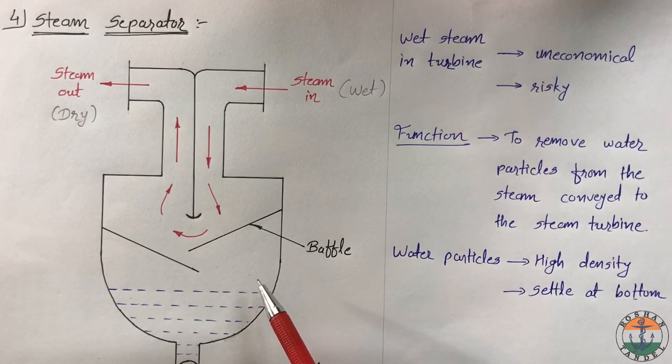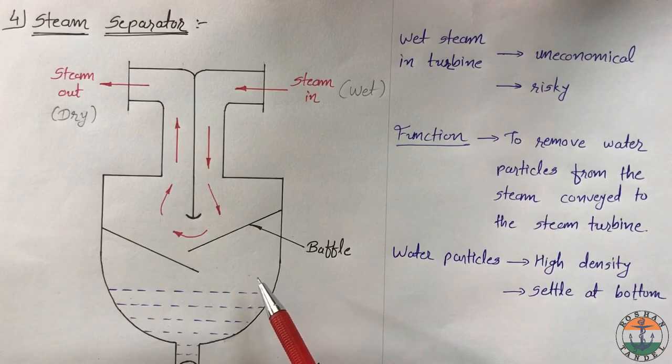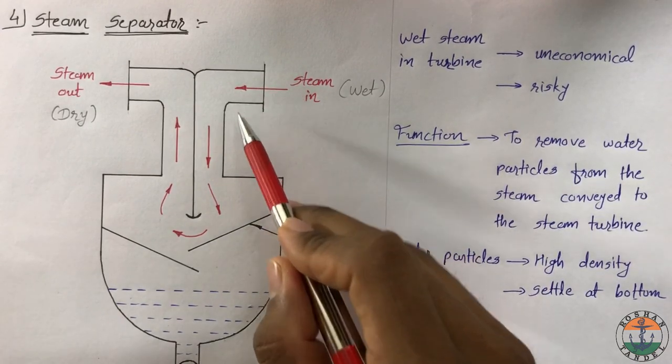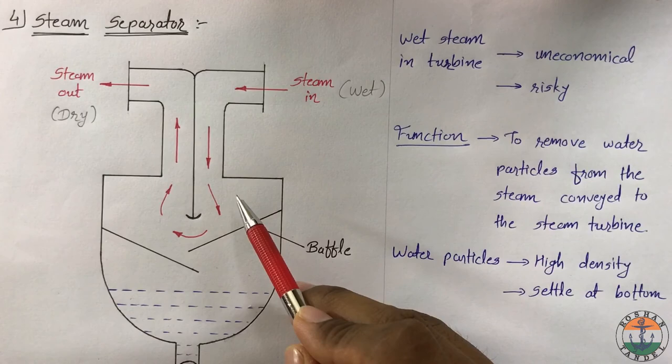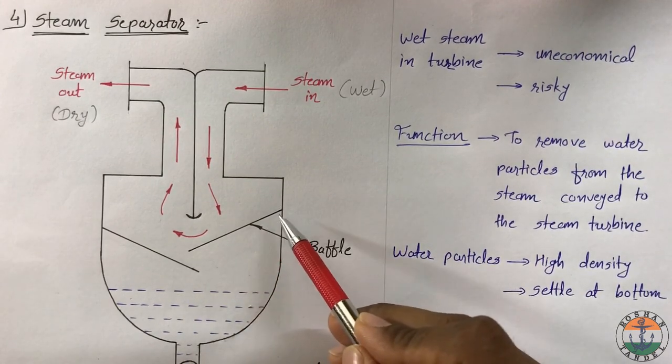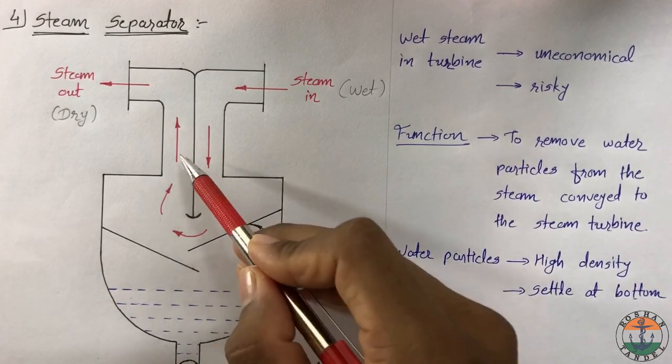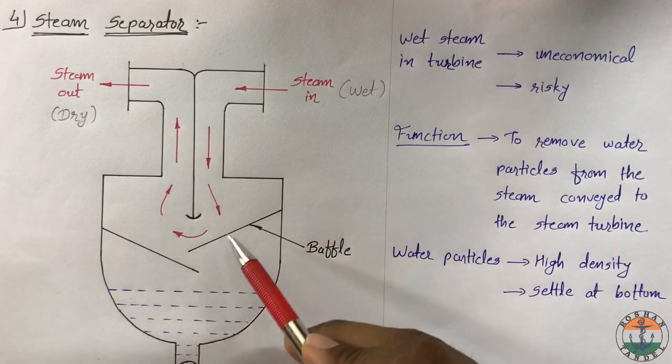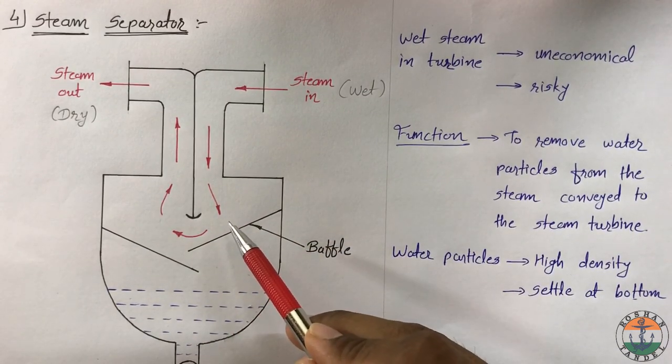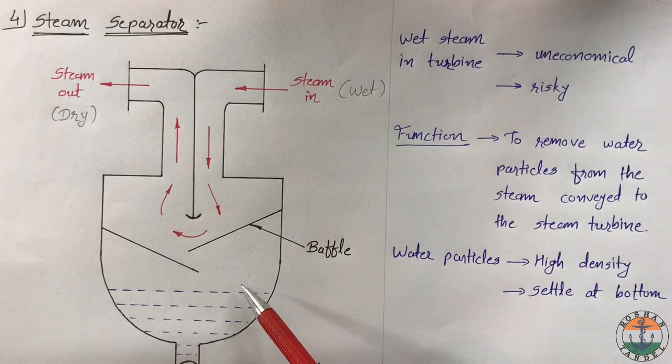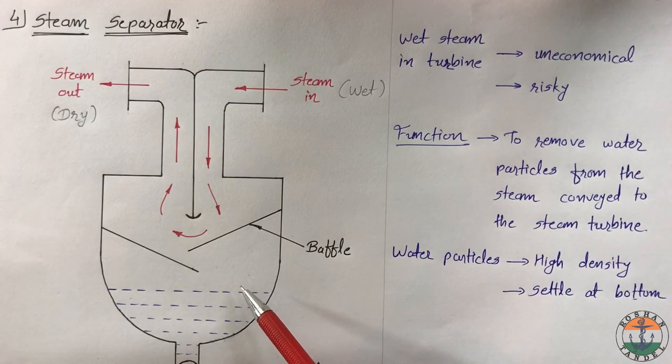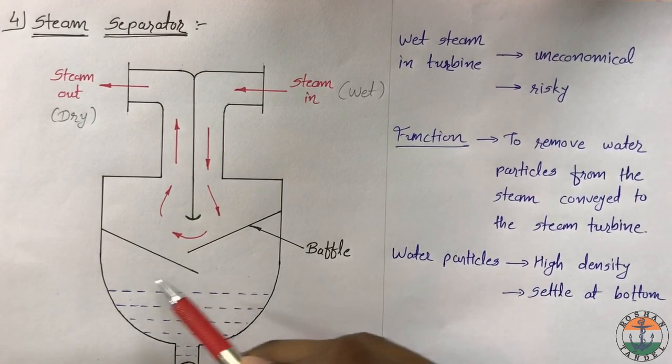Baffle type steam separator is shown here. Steam is passed from one side in the chamber, in which it strikes baffle plates and gets deflected. Because of higher density and inertia, water particles present in the steam fall down at the bottom of steam separator.